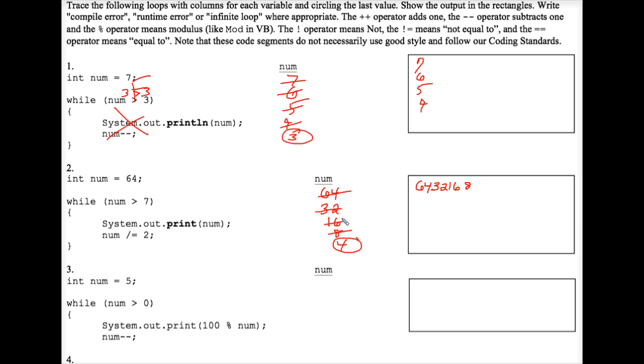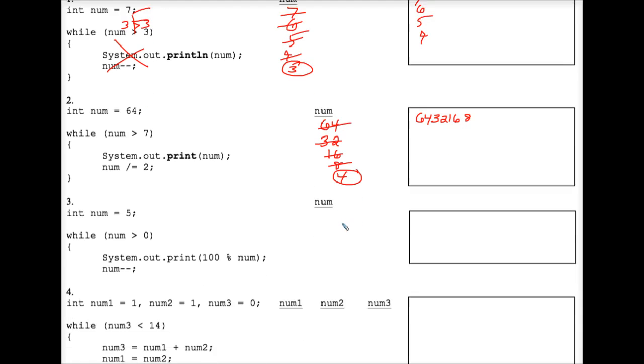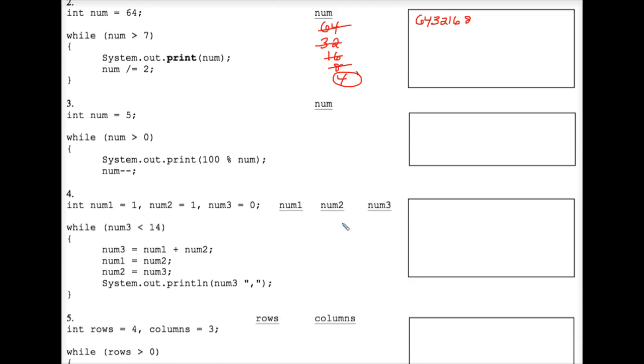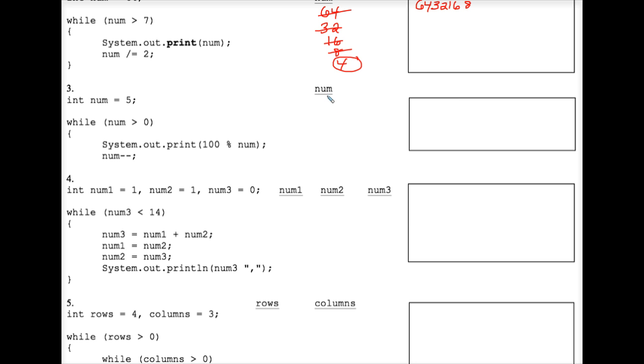Moving on to number 3. Num is initialized to 5, which is indeed greater than 0. 100 mod 5, the remainder. You should be able to do that in your head. The remainder of 100 divided by 5 is 0. And that prints.